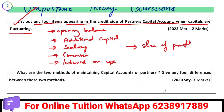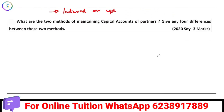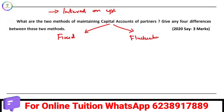What are the two methods of maintaining capital accounts? The two methods are: one, the fixed capital method, and two, the fluctuating capital method — fixed and fluctuating.